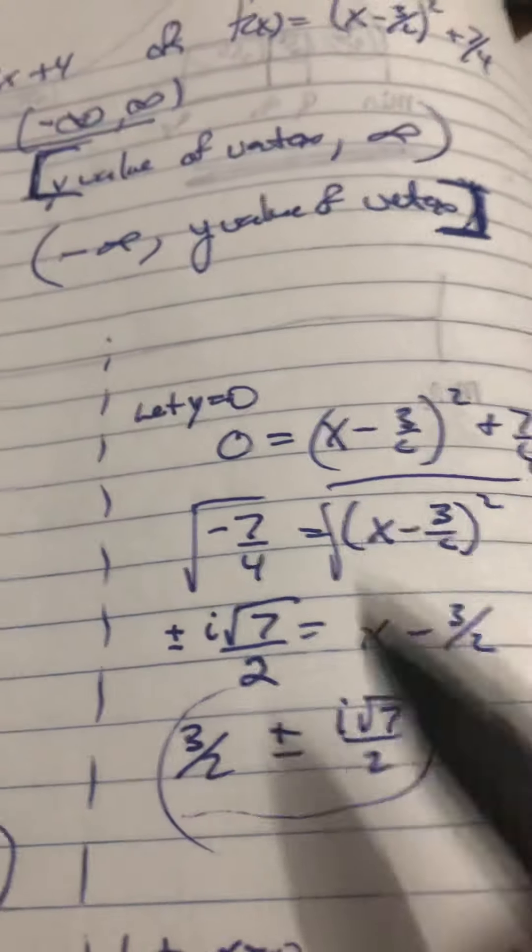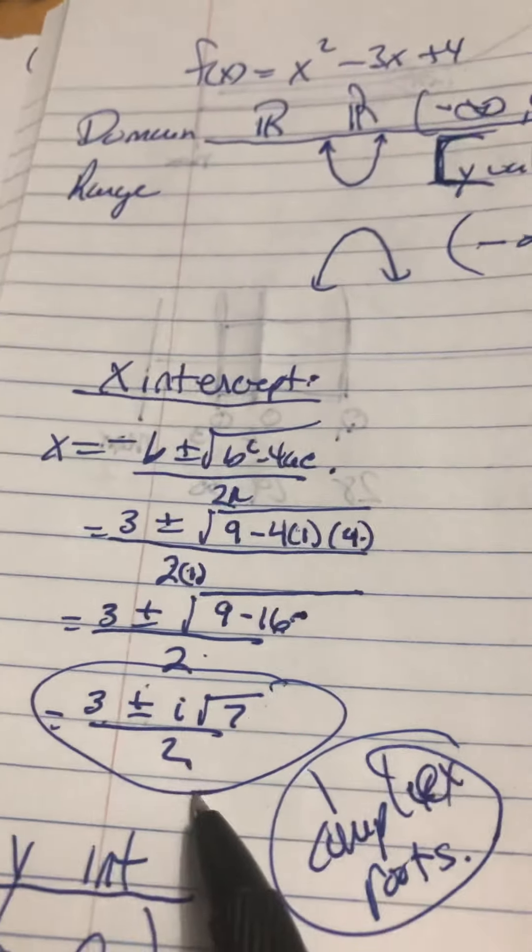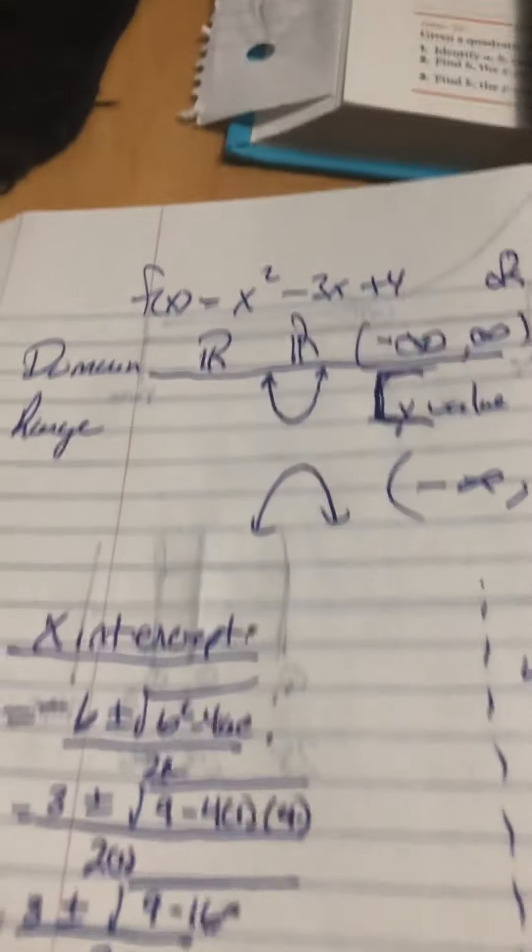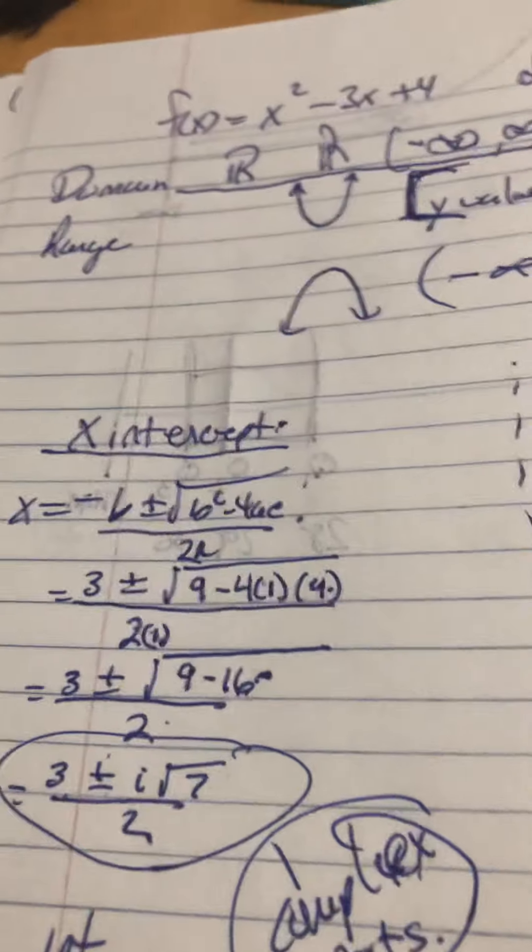So, this is the same as that. And they should be the same because these two are the same equation. Now, I've got complex roots, so we don't see them on the real plane.